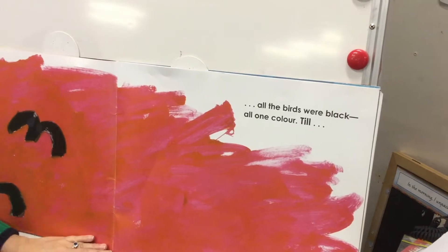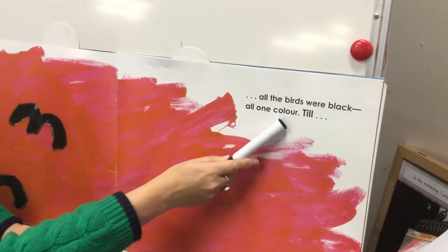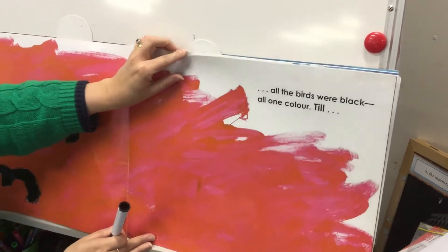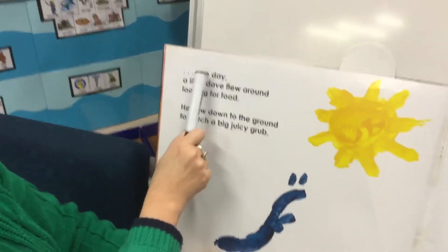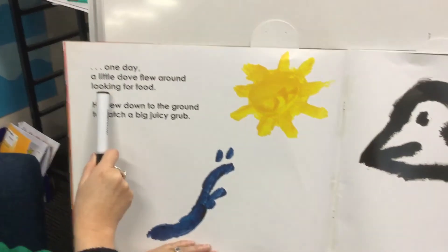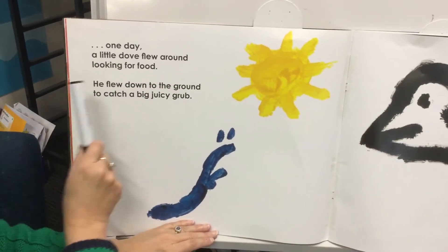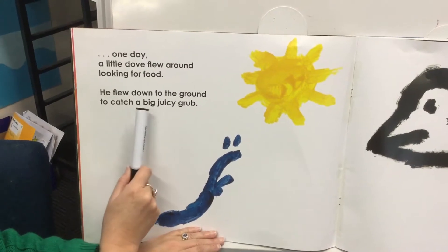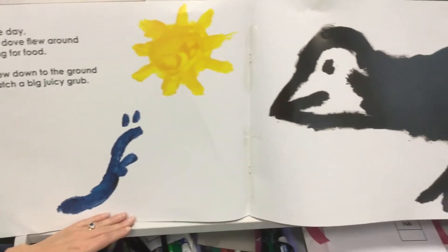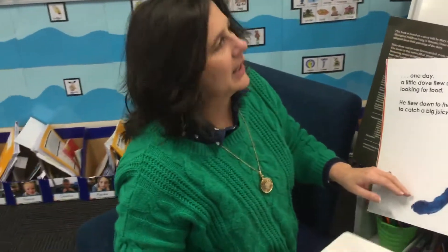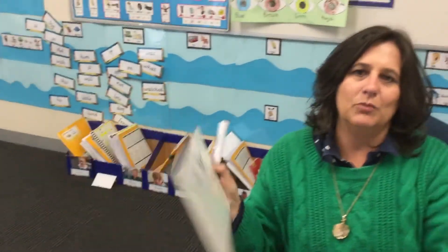All the birds were black — all one colour — until one day a little dove flew around looking for food. He flew down to the ground to catch a big juicy grub — and there's that grub, and there's dove. So let's go over to the table. I'm going to take this over with me because I'm going to use that to help me start my story.